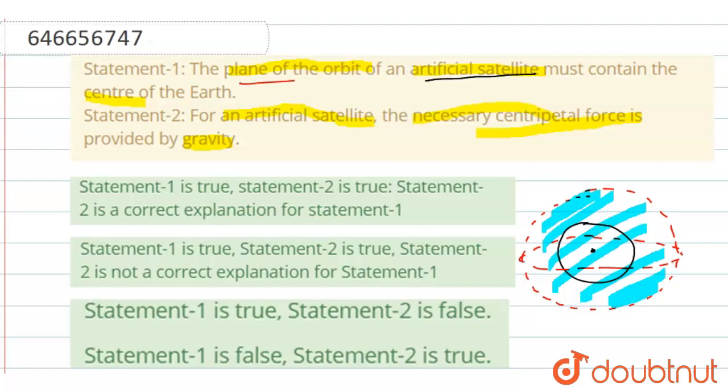Then, in the case of equatorial orbit, this is the plane of the orbit. So in any type of plane, obviously, the plane of the orbital will contain the center of the earth, that is this point. Now, this statement is true.